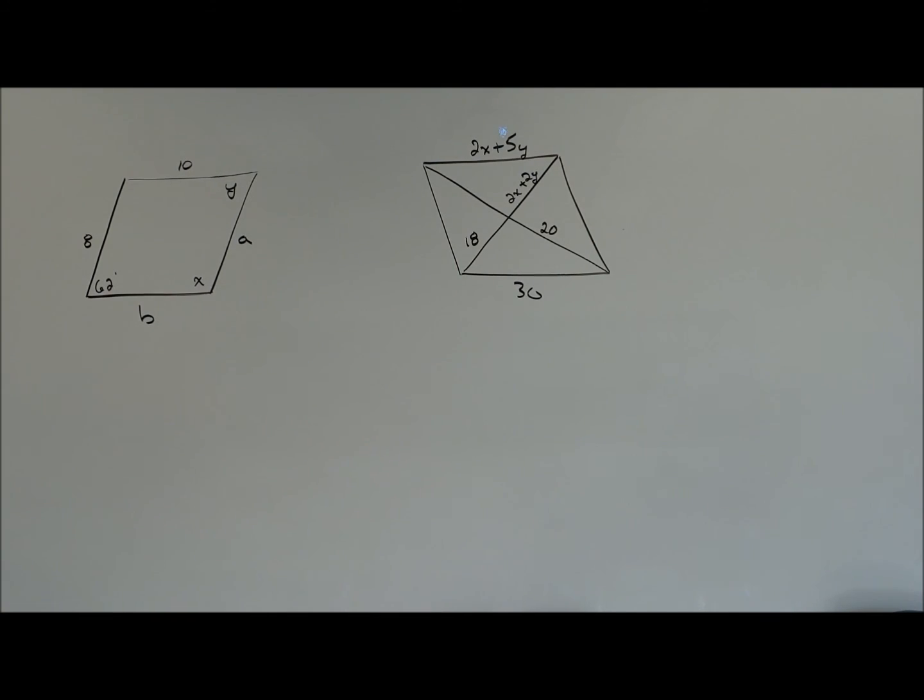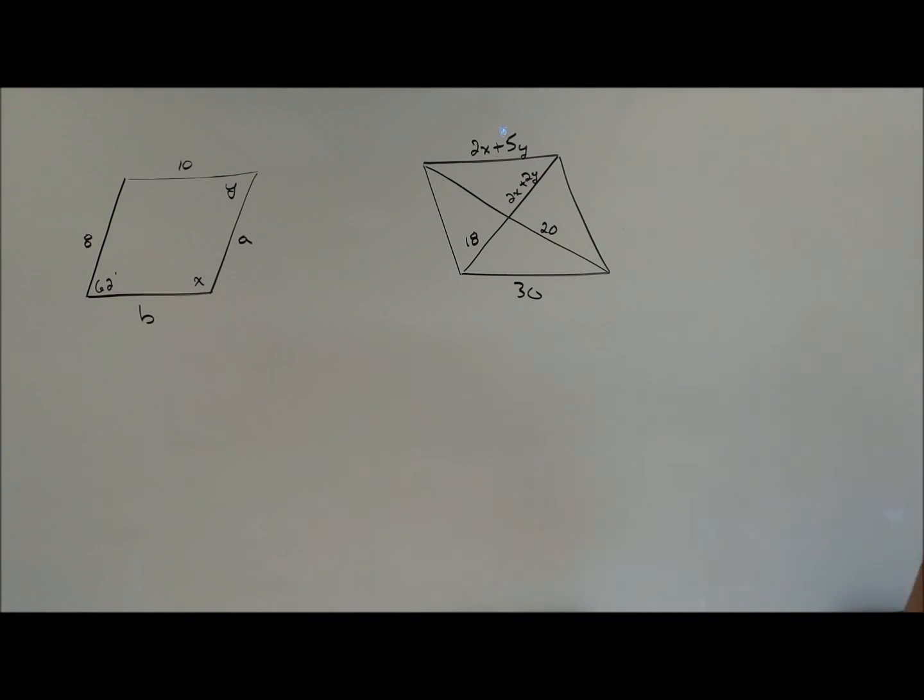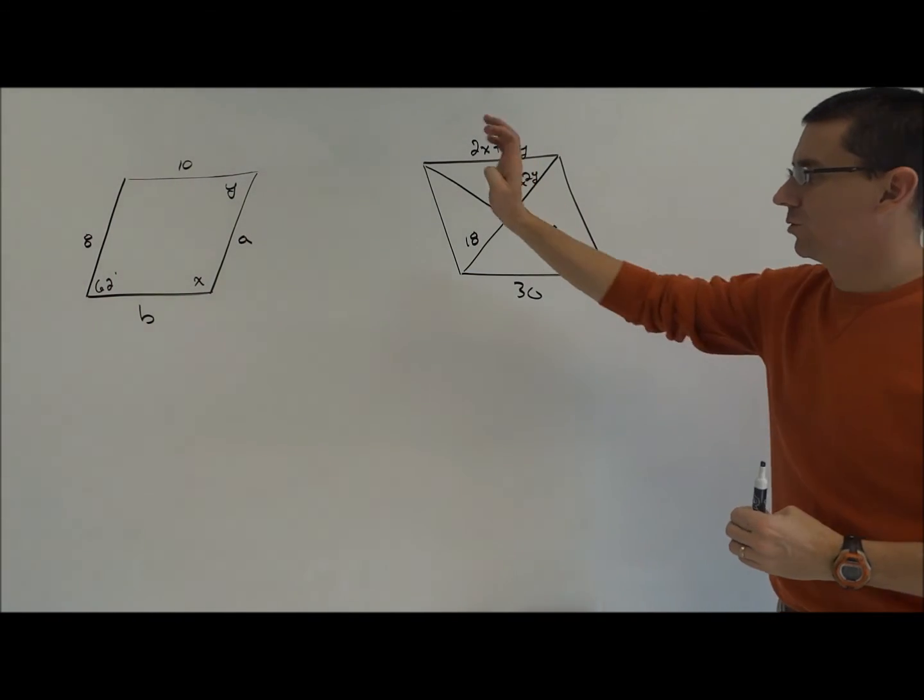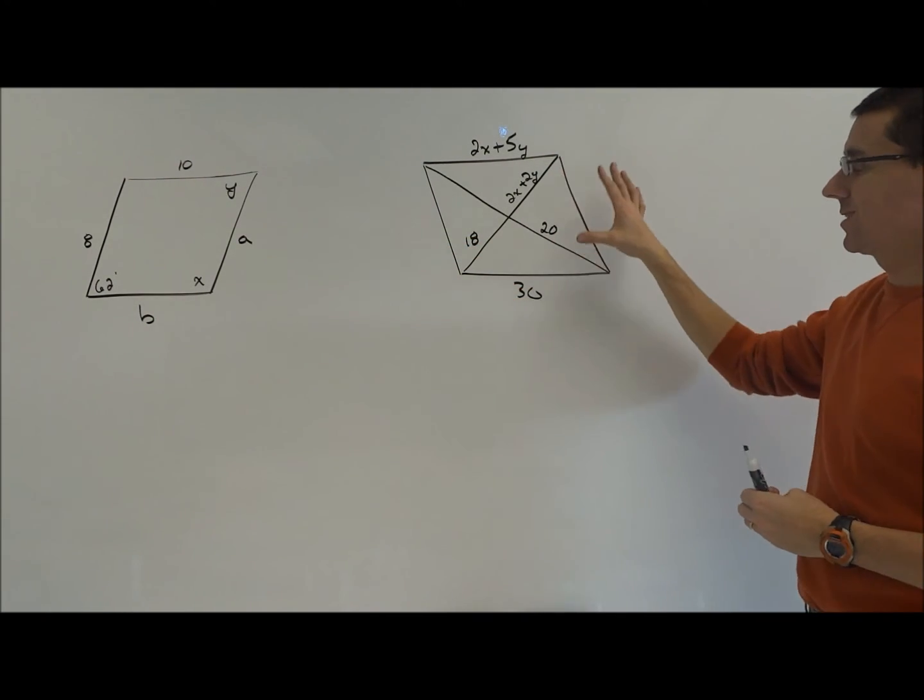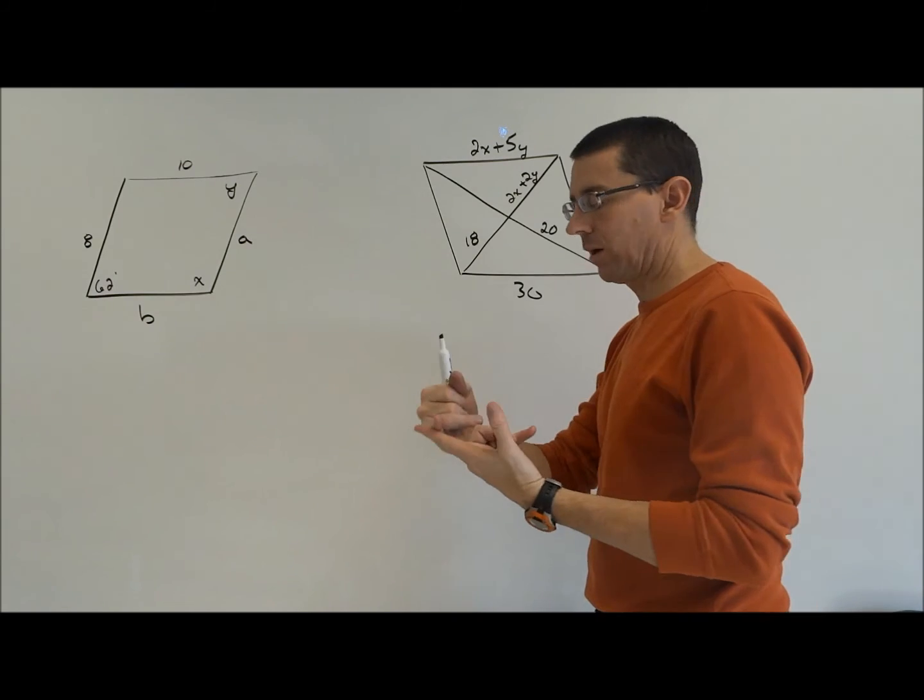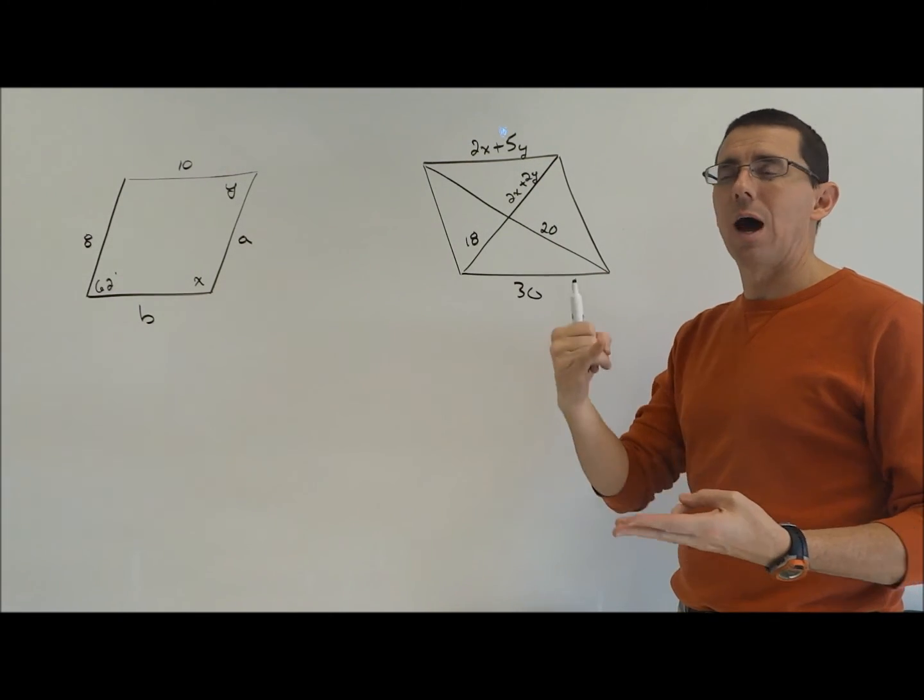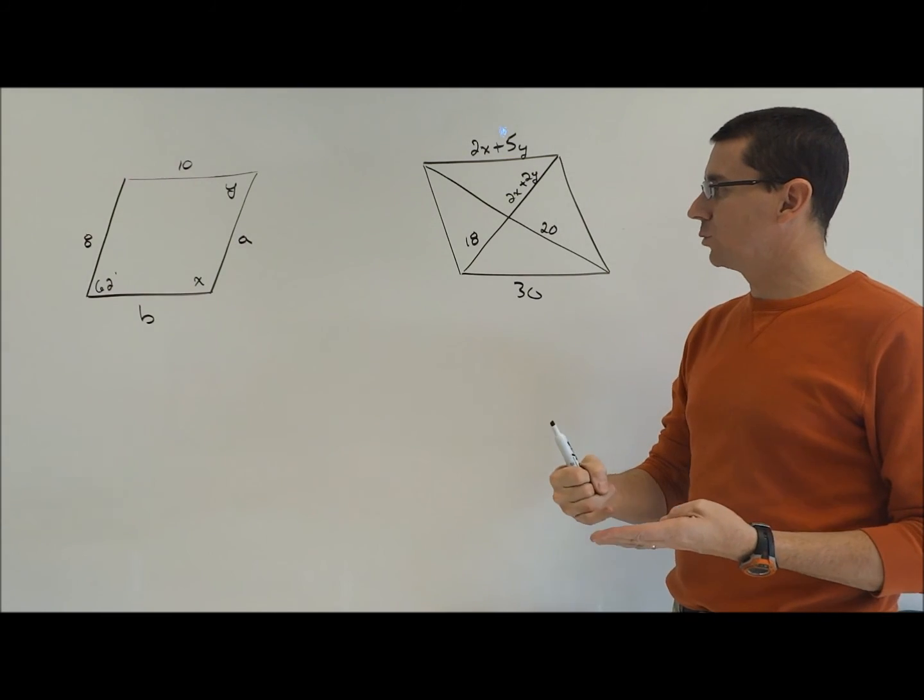Alright, so here's two basic problems where we're solving for either a variable or something like that, either a direct relationship or one where we've got to set up some equations and solve. So the four things we just went over again: parallelogram gives me opposite sides parallel, opposite sides congruent, opposite angles congruent, and diagonals bisecting each other.